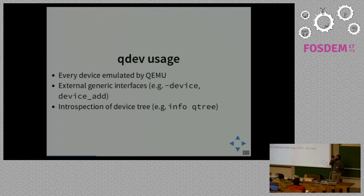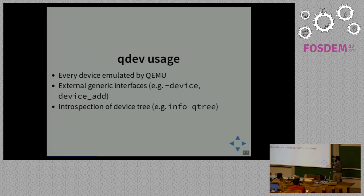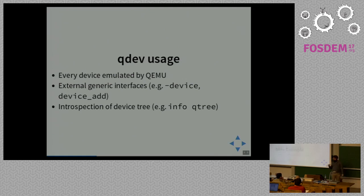QDEV is quite successful inside QEMU. It's used internally to create and configure basically every device. In addition to internal usage, it provides a generic command line and monitor interface to handle and plug devices. Its hierarchy and property system also allows users to introspect what's inside a virtual machine — for example, using the info-qtree device command.